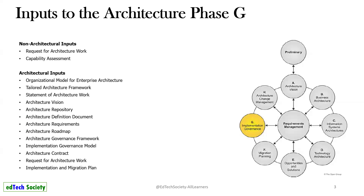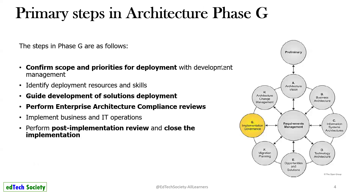You do not need to remember all the inputs to Phase G, but just have a look at what comes from other TOGAF phases. The non-architecture inputs include request for architecture work and capability assessment from preliminary phases. Architecture inputs include the tailored architecture framework, organization models, statement of architecture work, vision repository — all these things come from prior phases as input to Phase G.